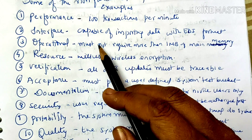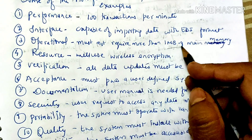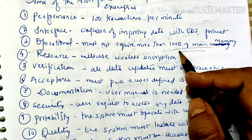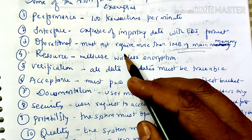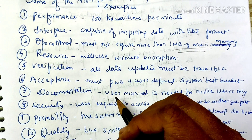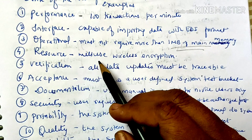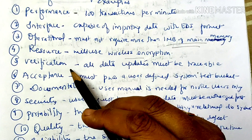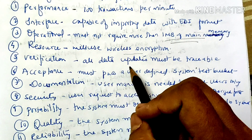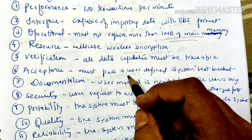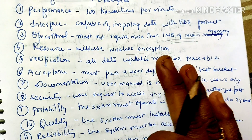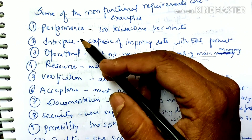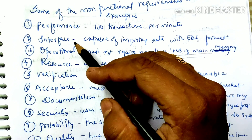Operational: must not require more than 1 MB of main memory — the customer specifies that more than 1 MB of main memory should not be used. Resource: will use wireless encryption. Verification: all data updates must be traceable. These are some examples of non-functional requirements — performance, interface, operational, resource, verification.